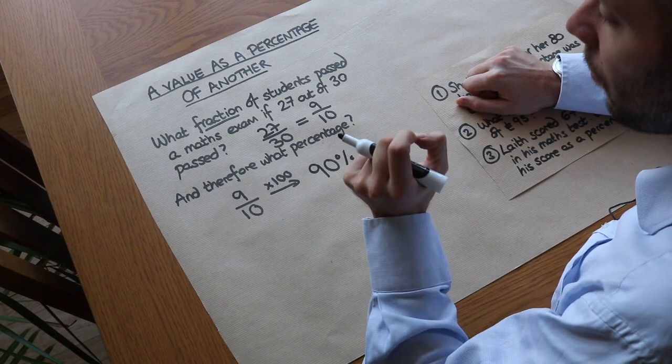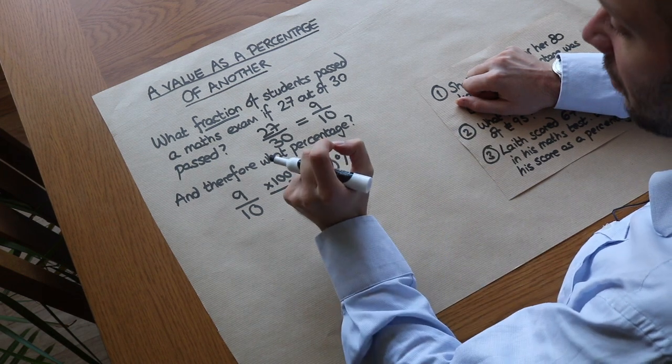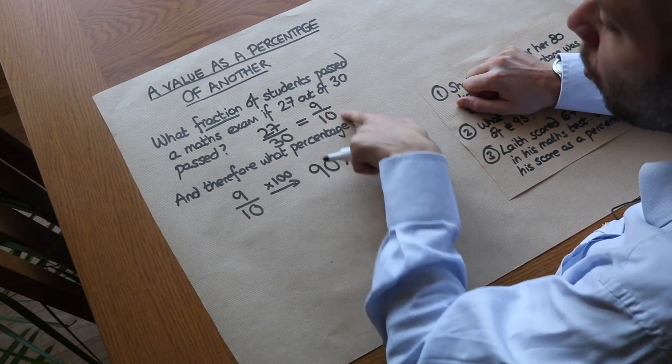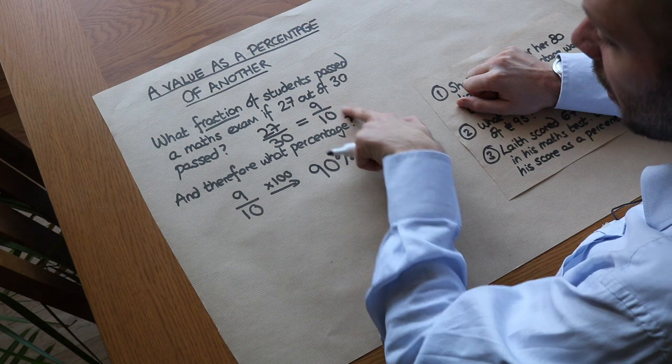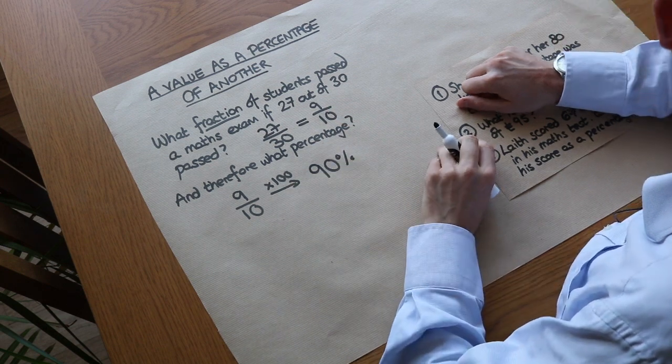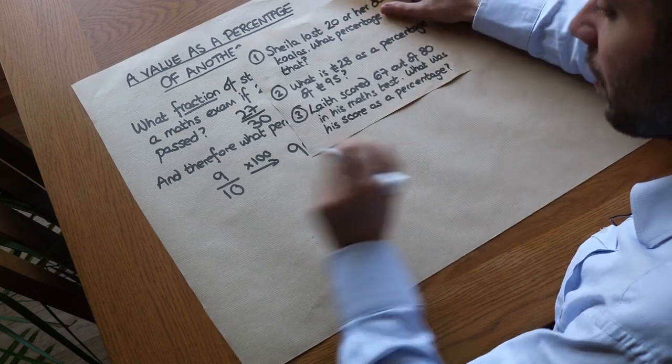Therefore, to find out what percentage one value is of another, we could work out first what fraction, or what proportion one value is of another, and then convert it to a percentage by just multiplying by 100. So let's illustrate with these examples.